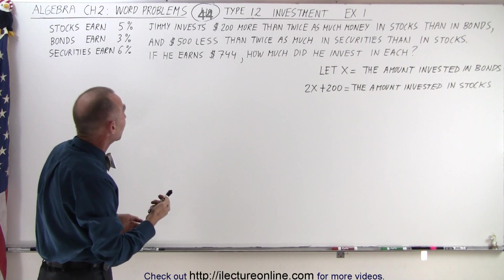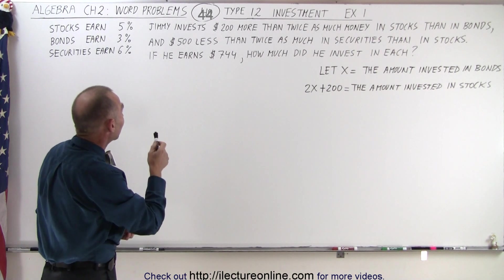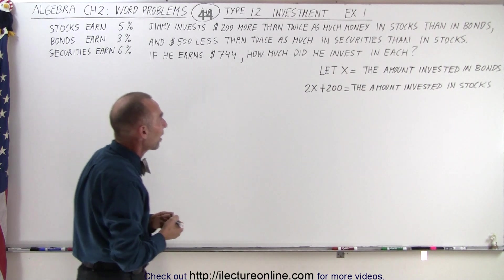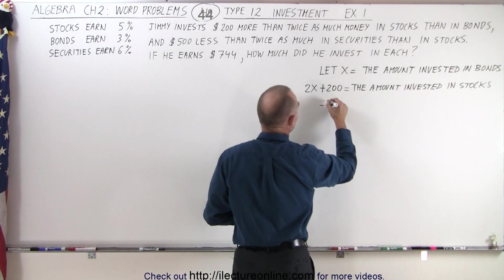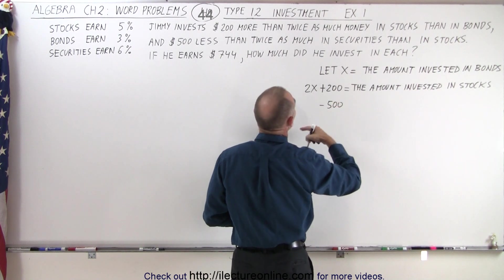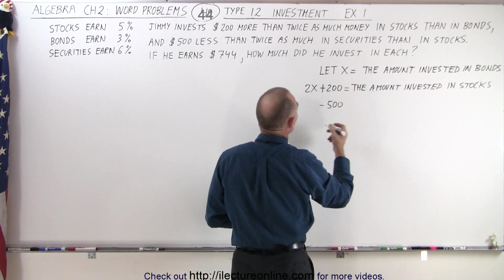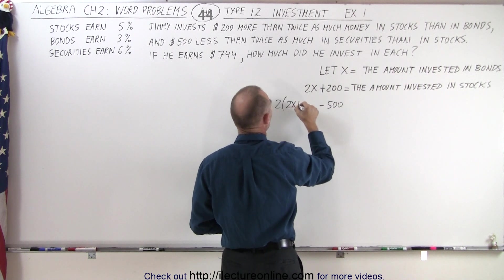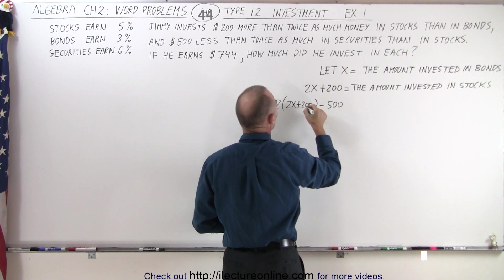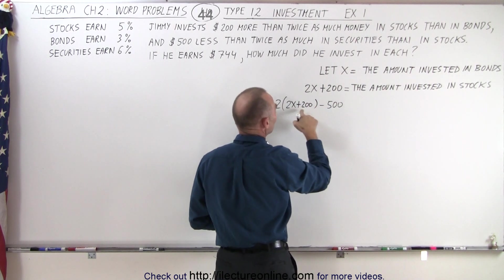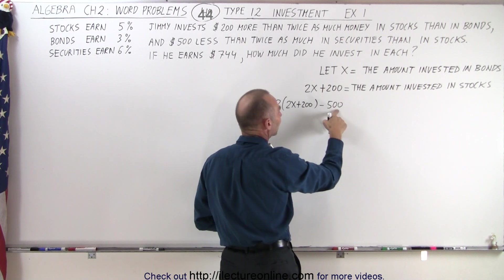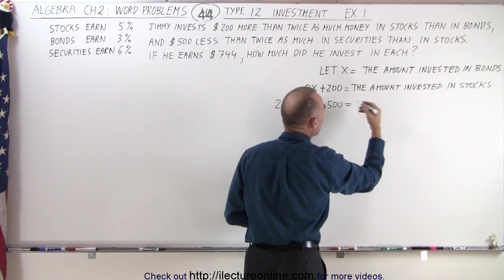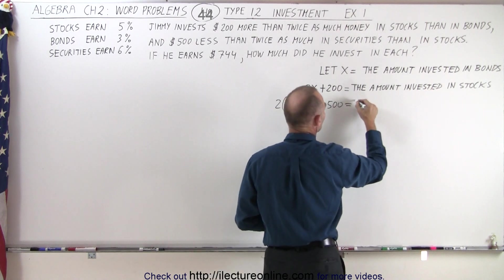Finally, we need to represent in terms of x how much we invest in securities, and now we're comparing it to the amount invested in stocks. It says five hundred dollars less than twice as much as is invested in stocks. So that's two times (2x plus 200) minus 500, because that's the amount invested in stocks. So five hundred less than twice as much as is invested in stocks is the amount invested in securities.